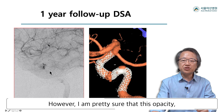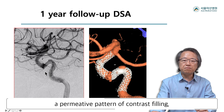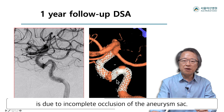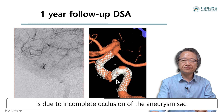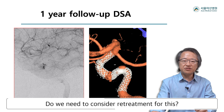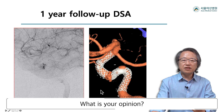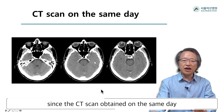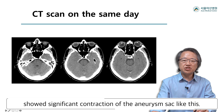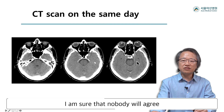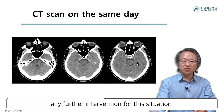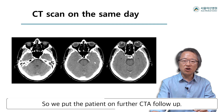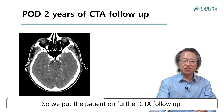However, I am pretty sure that this permeative pattern of contrast filling is due to incomplete occlusion of the aneurysm sac. Do we need to consider retreatment for this? The decision was not that difficult, since the CT scan obtained on the same day showed significant contraction of the aneurysm sac. I am sure nobody would agree to any further intervention in this situation, so we put the patient on further CTA follow-up.